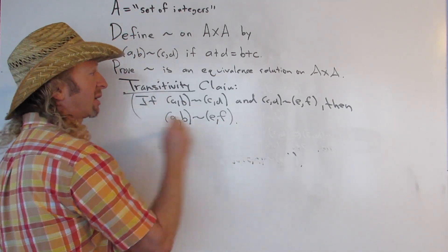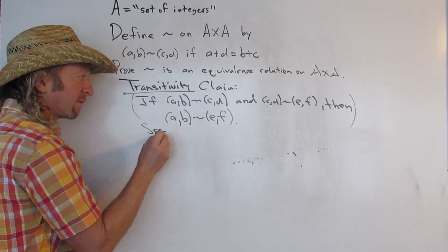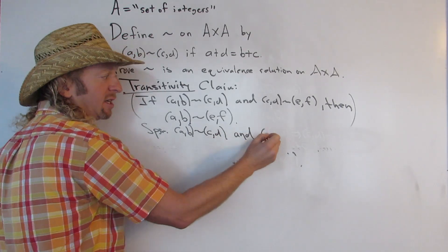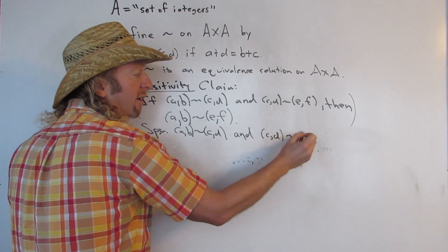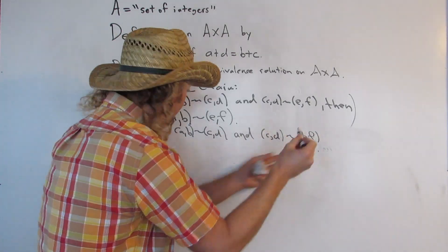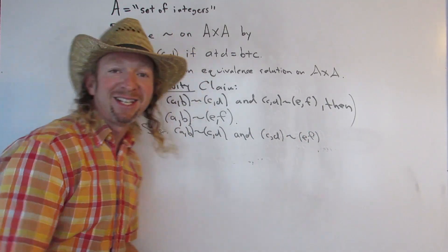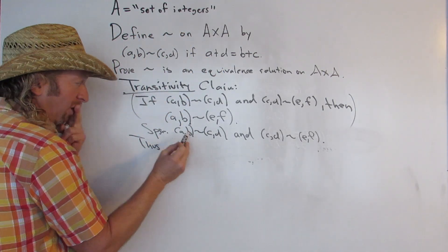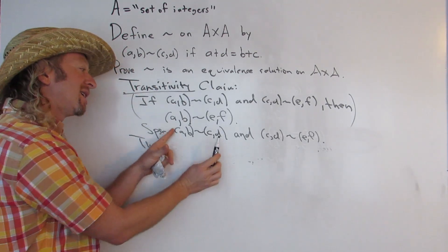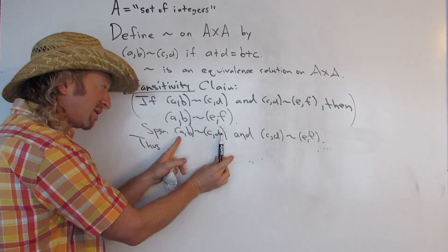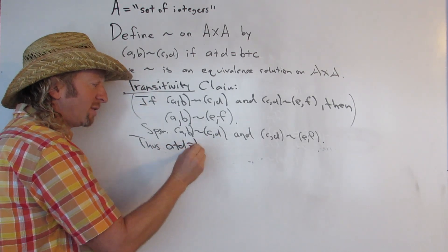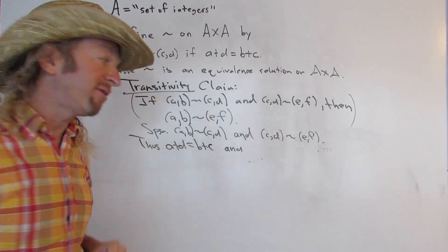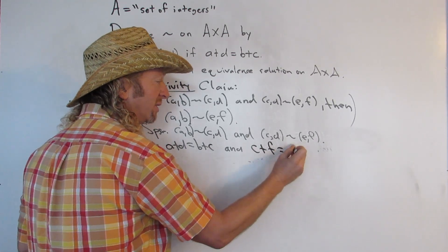Suppose AB is related to CD, and CD is related to EF, for any AB, CD, and EF. This means A plus D equals B plus C, and C plus F equals D plus E. Now we have to show that AB is related to EF, meaning A plus F equals B plus E.